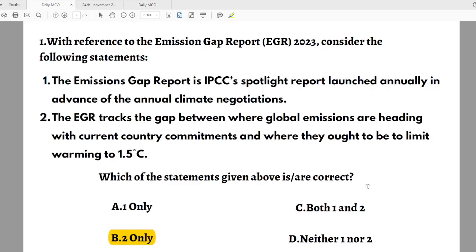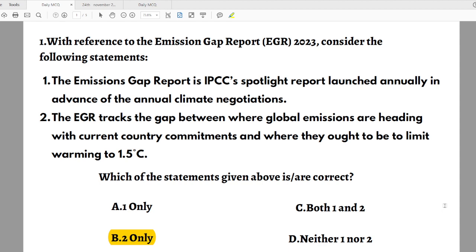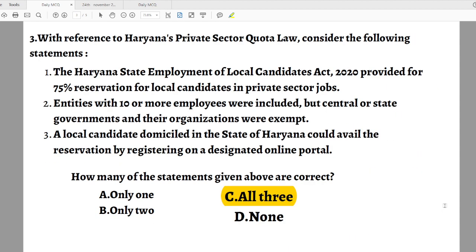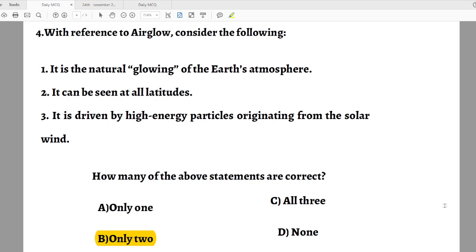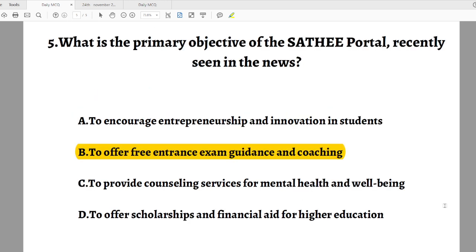Now we will see the answers for the previous questions. Question number one answer is B. Question number two answer is D. Question number three answer is C. Question number four answer is B. Question number five answer is B. That's all about the current affairs and MCQs. Thanks for joining with us.